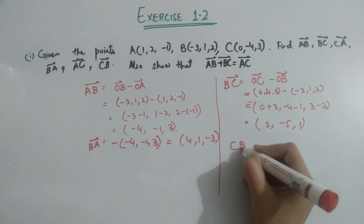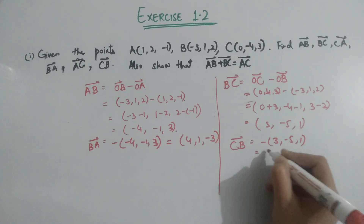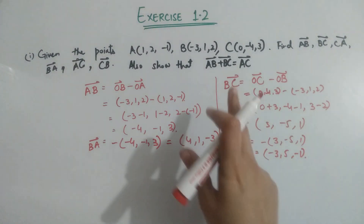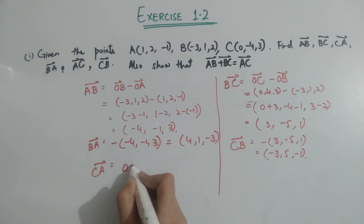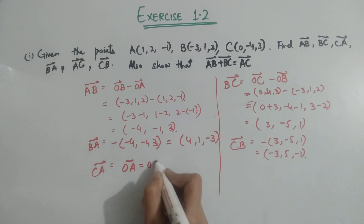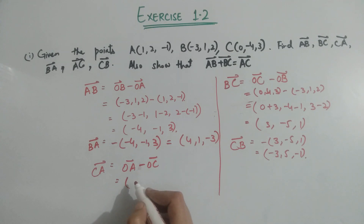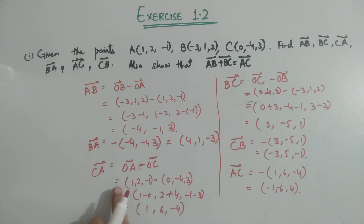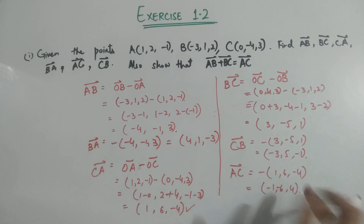So CB equals minus times BC, giving (minus 3, 5, minus 1). Now the last one is CA. CA equals OA minus OC. After putting values of OA and OC and finding the difference, you get CA. After multiplying by minus sign you get AC.